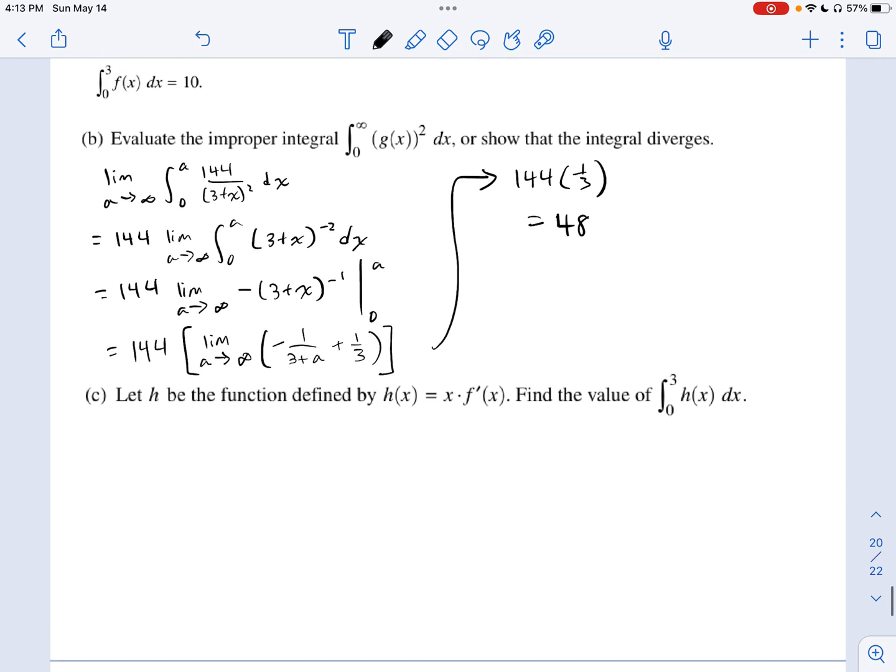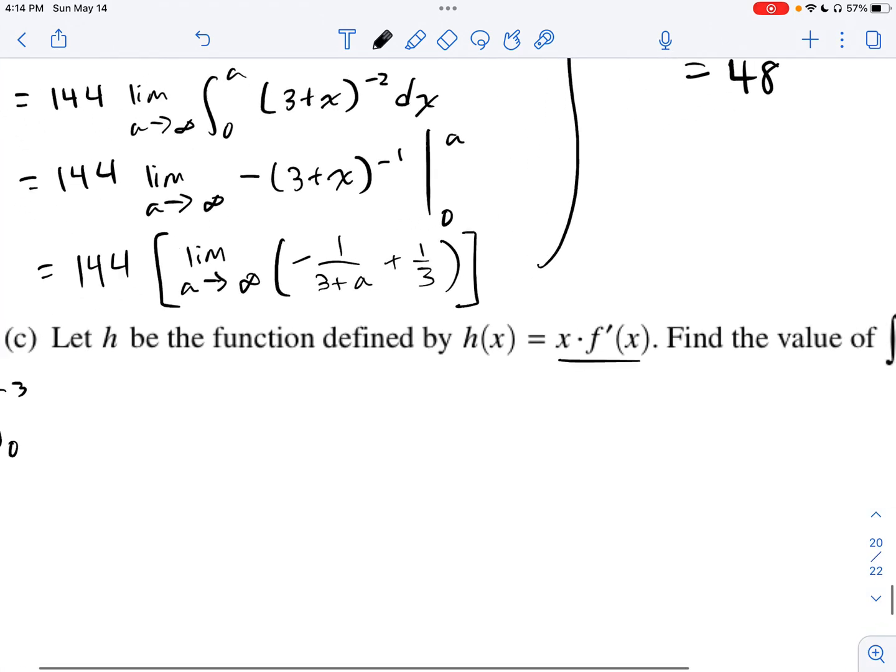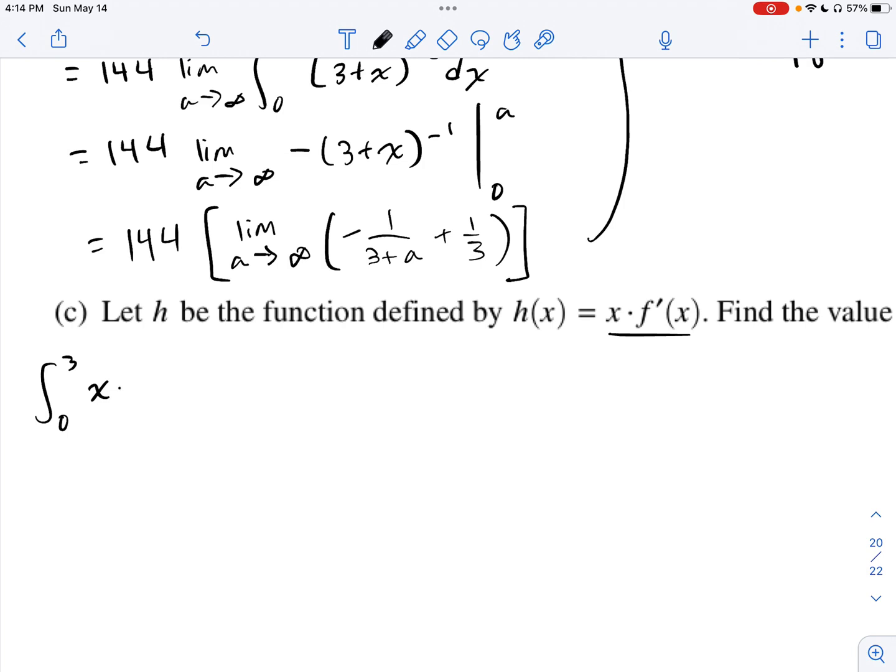Last part. We're now going to let h, our new function, we're introducing a new function to the game. h is a function defined by x times f prime of x. And this right here, when I first saw this, I knew right away what we're going to need to do. And sure enough, it says find the value of h(x) with respect to x from 0 to 3. And what I was alluding to earlier is this is a prime candidate for integrating by parts. So if h(x) is equal to this function, I can say the following. Let's rewrite that here. We've got 0 to 3. We have x times f prime of x dx.